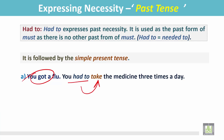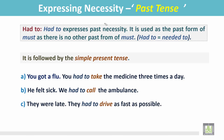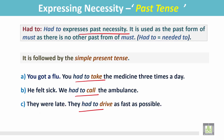Had to expresses necessity in the past. Example: He felt sick — we had to call the ambulance. He was feeling sick and it was needed to call the ambulance. Another example: They were late, so they had to drive as fast as possible — they needed to drive as fast as possible. Had to expresses past necessity, and is always followed by the simple present form of the verb.